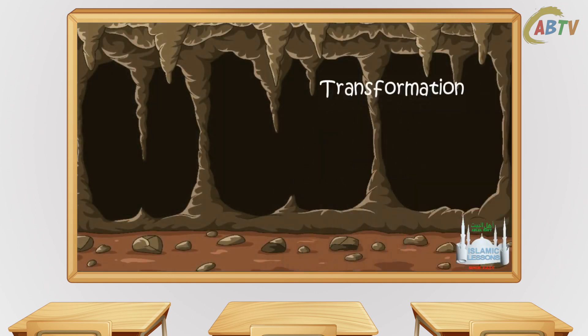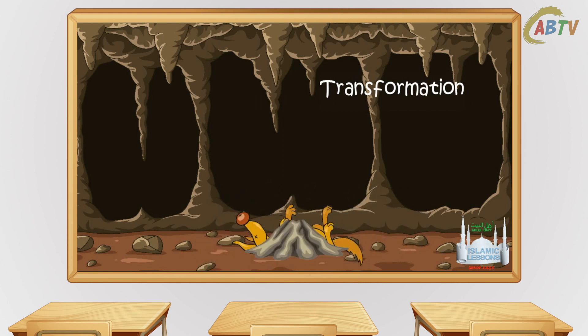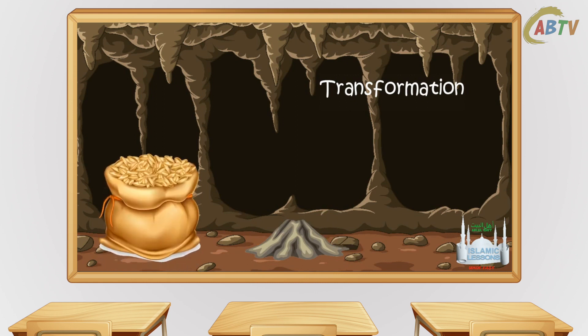Transformation is also another purifier, meaning that its essence transformed into something totally different. For example, a dog dies and it decomposes into ash — the ash is tahir. But if the essence of the najas thing did not transform, it is still najas. For example, if wheat became najas and you turned it to flour or bread, it is still najas.